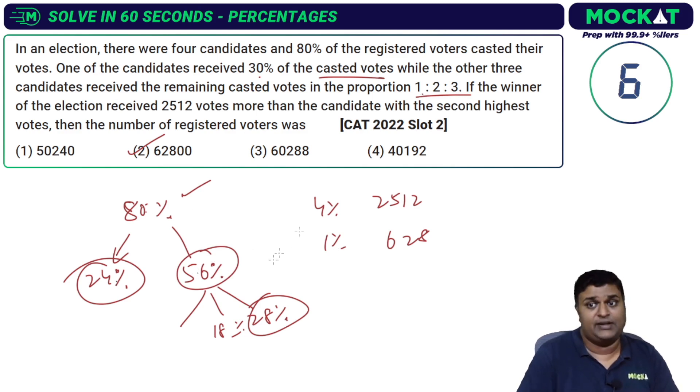80 minus 24 is 56, and that's in the ratio 1:2:3. If the winner received 2512 votes more than the second highest, 24 percent is going to be one of them, but I'm concerned about the winner and second highest in the 56 percent. The highest in this ratio is three parts out of six total - that's half of 56, which is 28 percent.